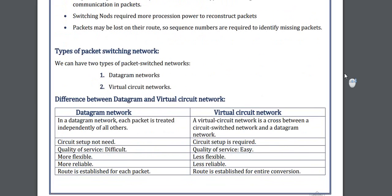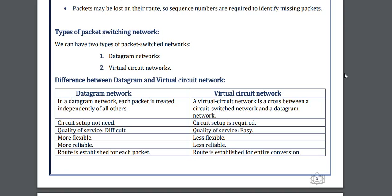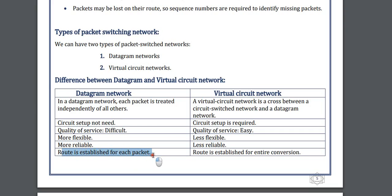Types of packet switching: there are two types — one is datagram network and one is virtual circuit network. Datagram network does not need to set up a connection, but in virtual circuit network you need to set up a connection. Datagram is more difficult but virtual circuit is easier. Datagram is more flexible but virtual circuit is less flexible. Virtual circuit is less reliable and datagram is more reliable. Route is established for each packet in datagram, but route is established for the entire conversation in virtual circuit network. These differences are very important for your exam questions — take a snap of this.